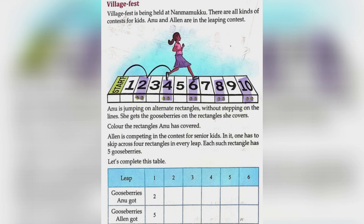Let's complete this table. Gooseberries Anu got: 2, 4, 6, 8, 10, 12.